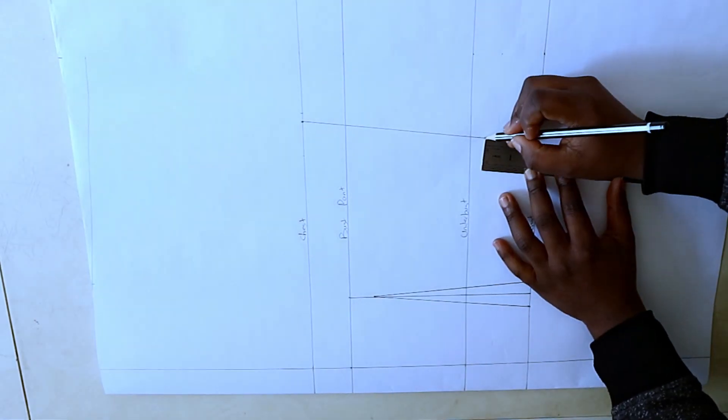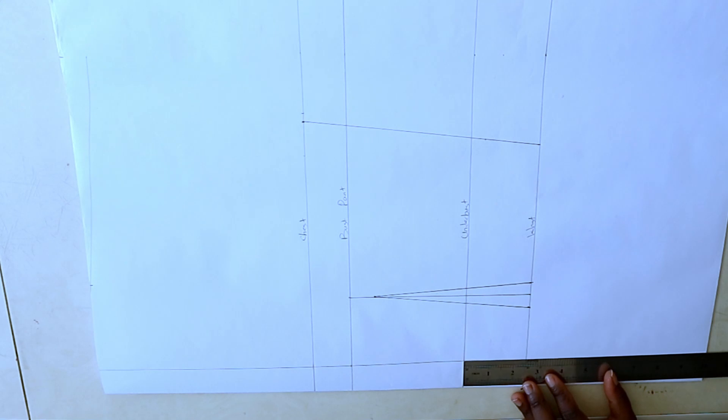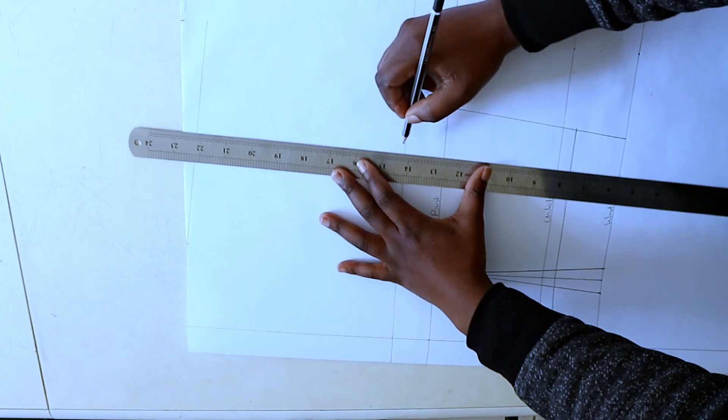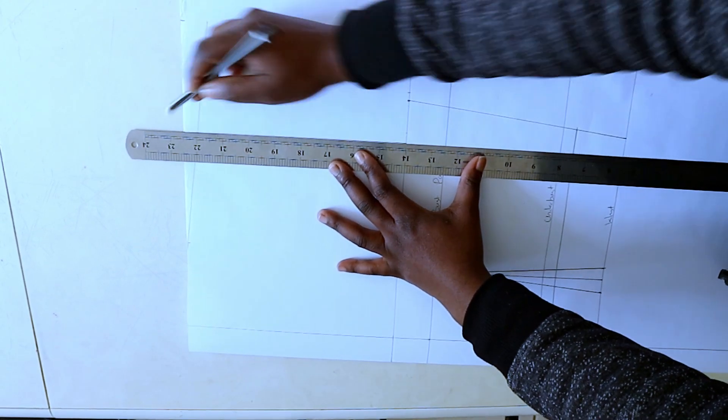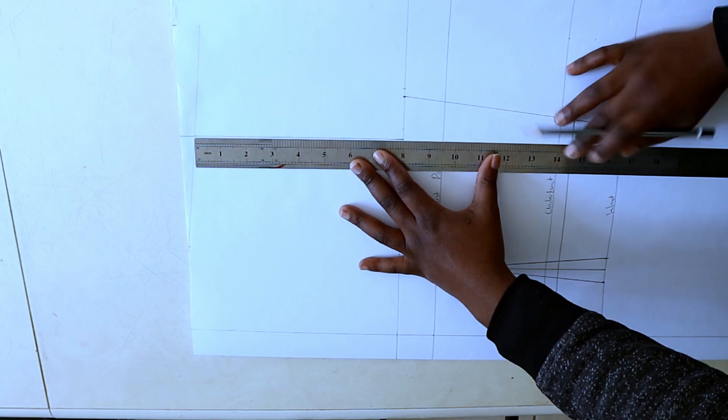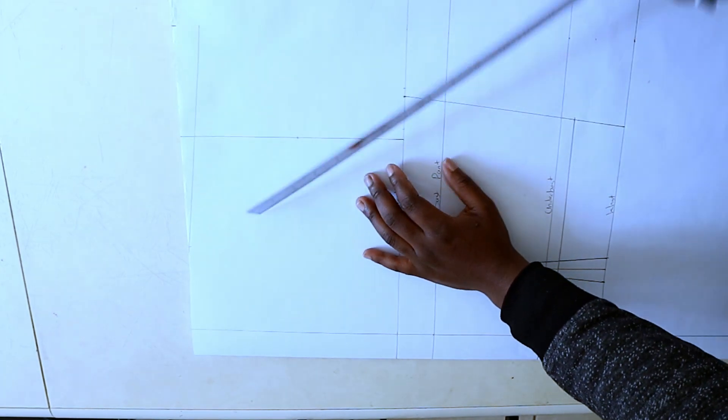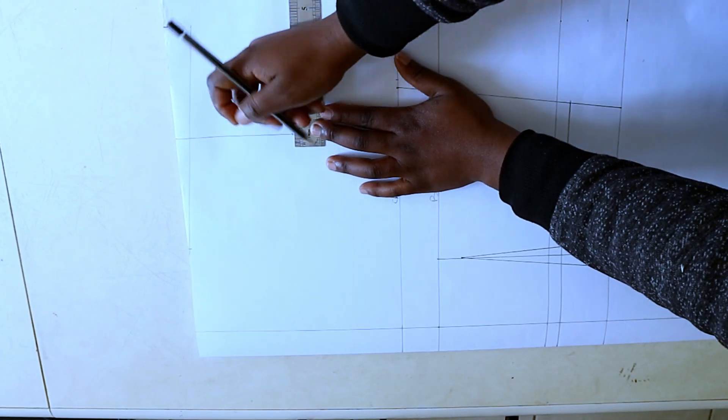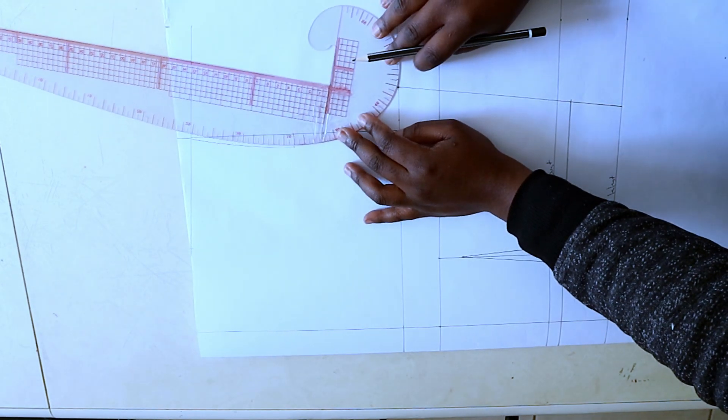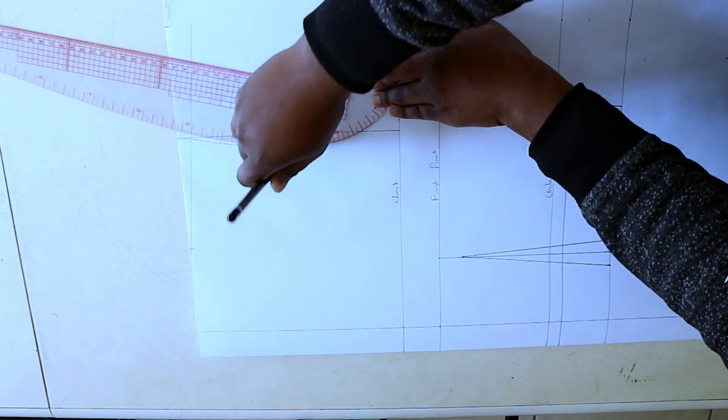To create the waistband, mark 2 inches up from the waistline and square this across. Now I'm back to the top of the bodice. Draw a vertical line from the shoulder point to the chest line, find the midpoint of that line, and mark inwards by three-quarters of an inch. Then draw the front armhole curve like so and then mark the back armhole.